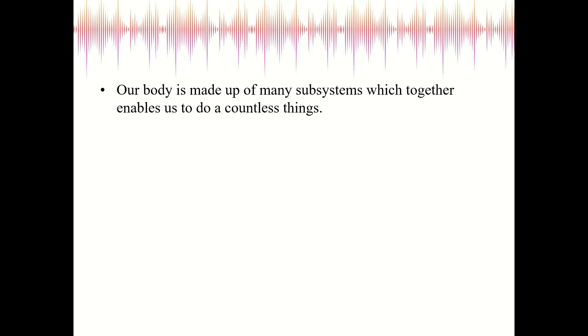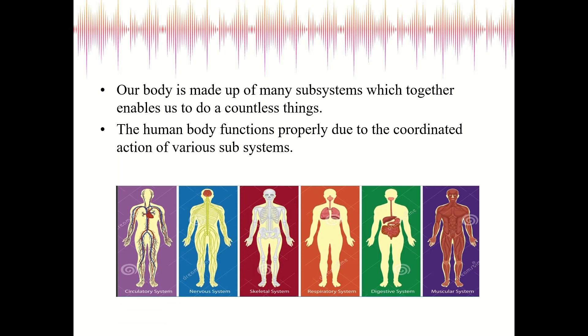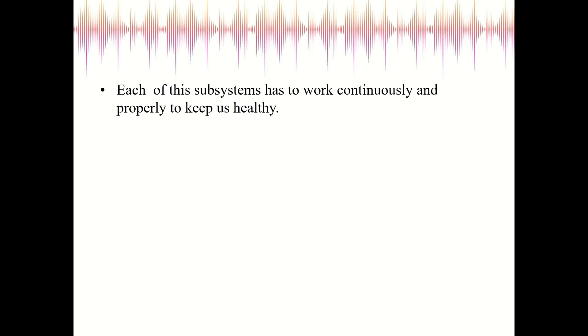The human body functions properly due to the coordinated action of various subsystems. What are the different subsystems that make our body a system? We have circulatory system, nervous system, skeletal system, respiratory system, digestive system, and muscular system. Each of these subsystems has to work continuously and properly to keep us healthy.